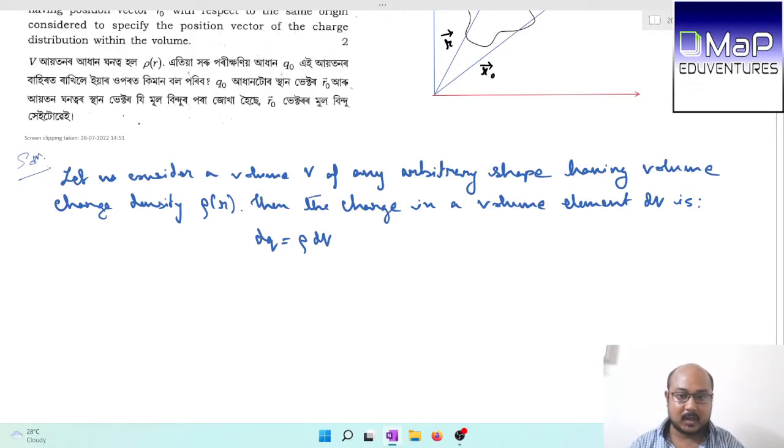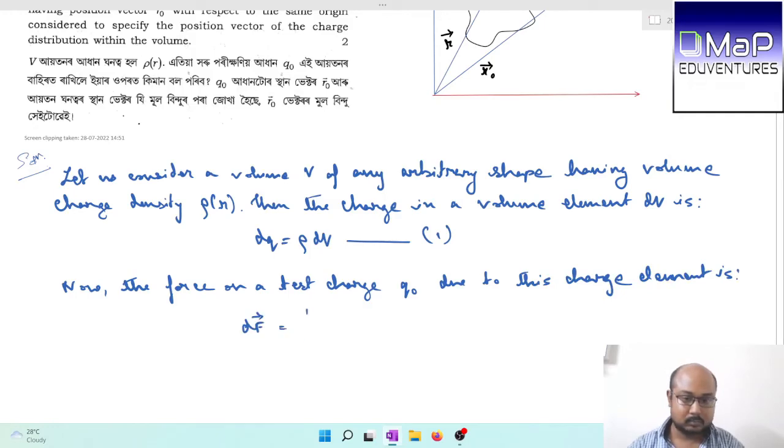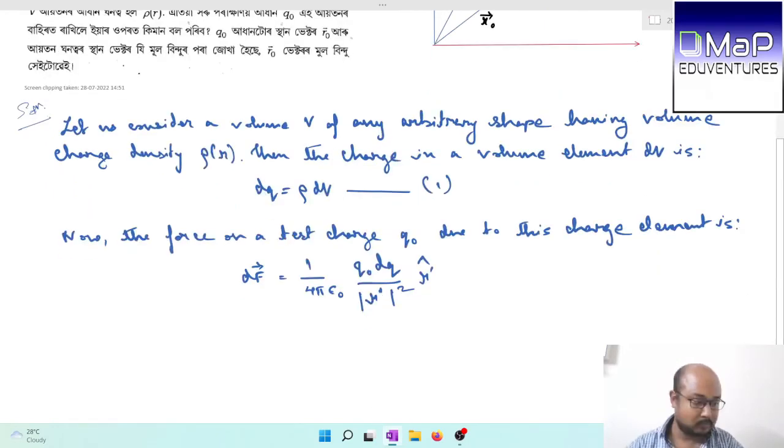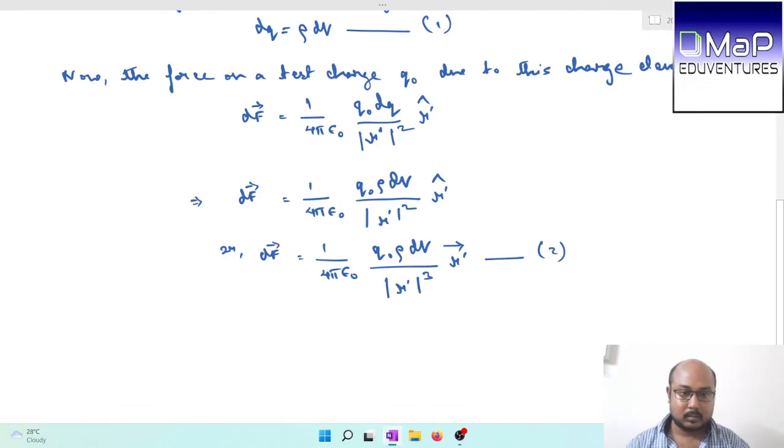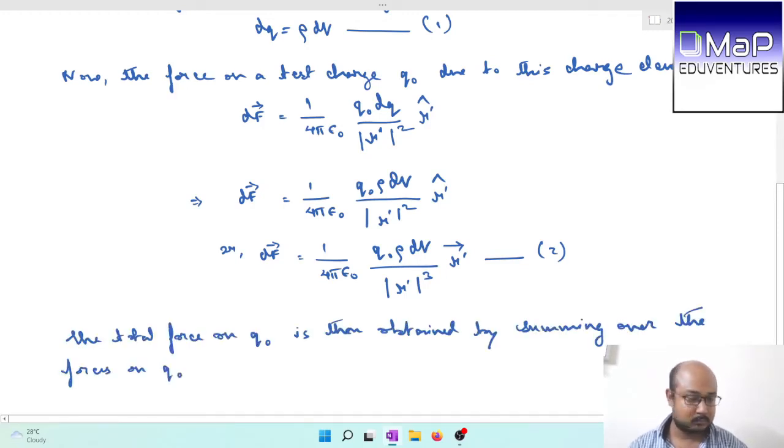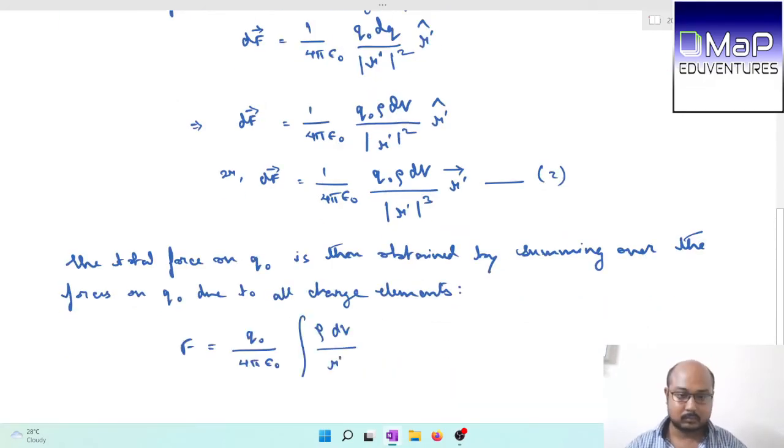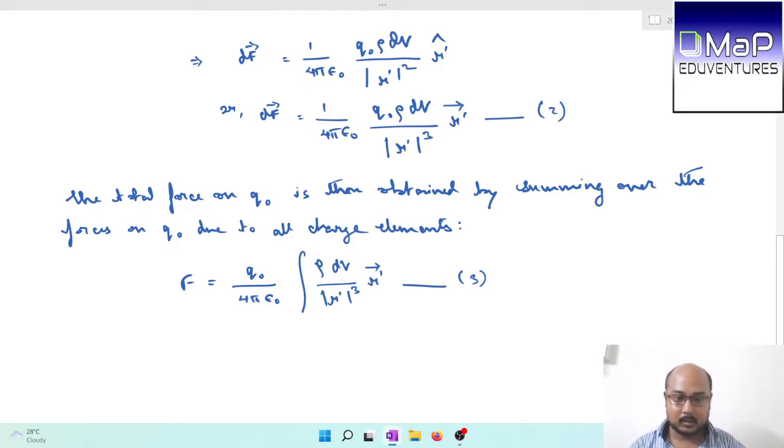Let us consider a volume V of any arbitrary shape having volume charge density rho r. Then the charge in a volume element dV is dq equals rho dV. So dF equals 1 by 4 pi epsilon naught q naught rho dV by cube of the modulus of r dash, and r cap is the direction. Then the total force on q naught is the integration over the volume.